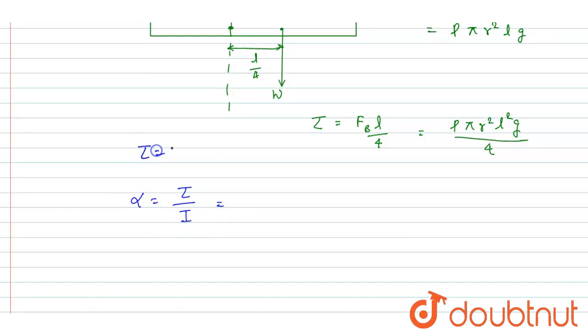Since we know that tau equals I alpha, I wrote here that alpha is tau by I. So you just divide this expression by I, and this will be the alpha and the answer to this question.